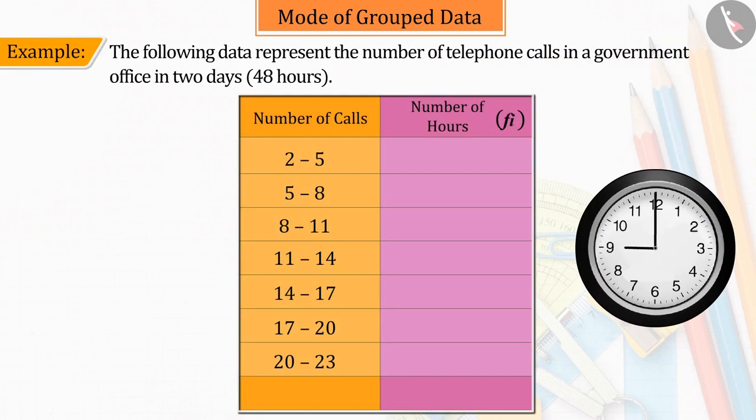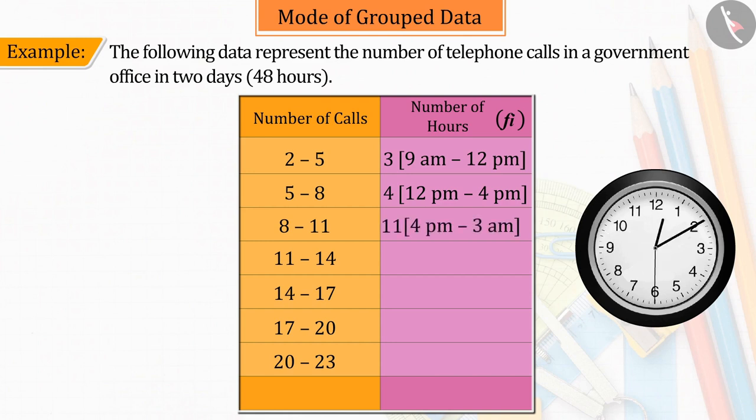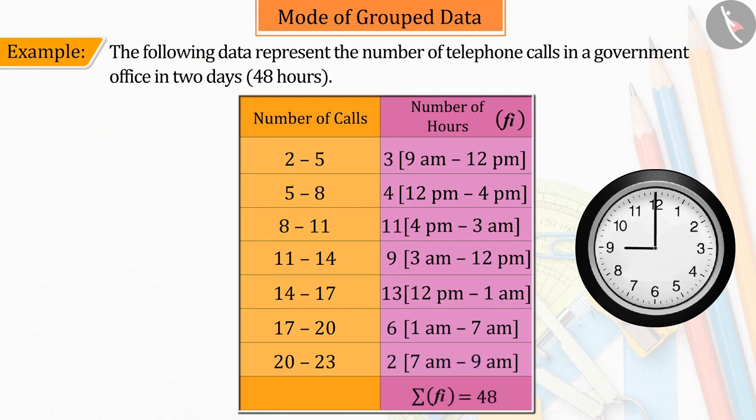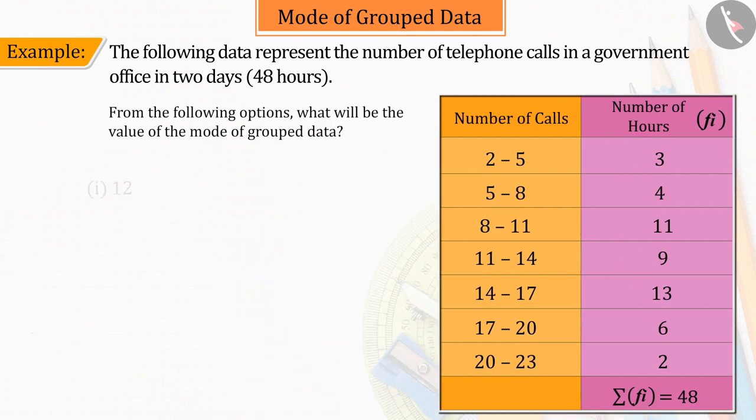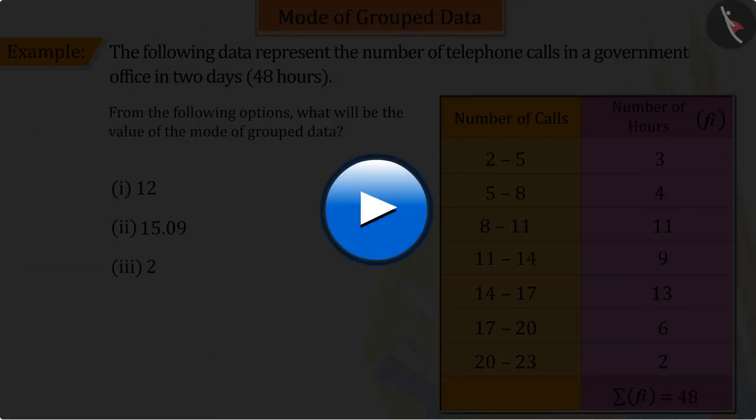The following data represent the number of telephone calls in a government office in 2 days, i.e., 48 hours. So, can you tell what will be the value of the mode of the following data? Pause the video to solve the question and then check your answer.